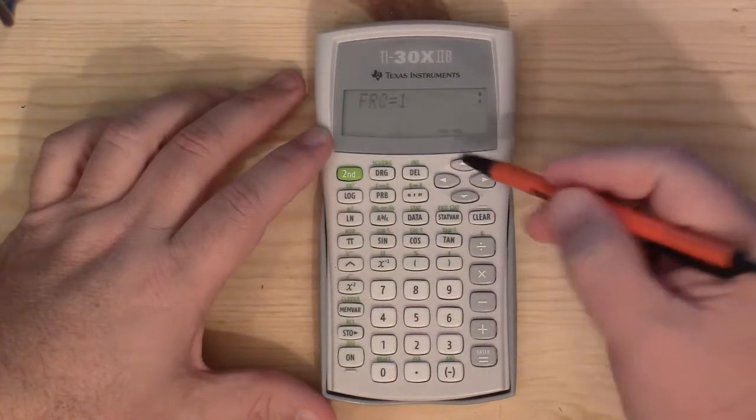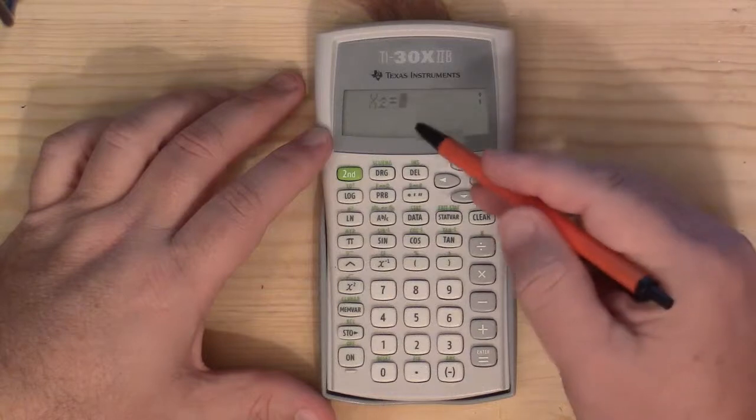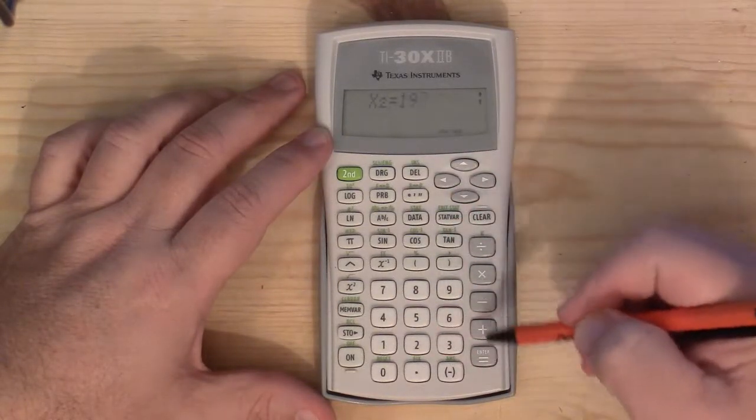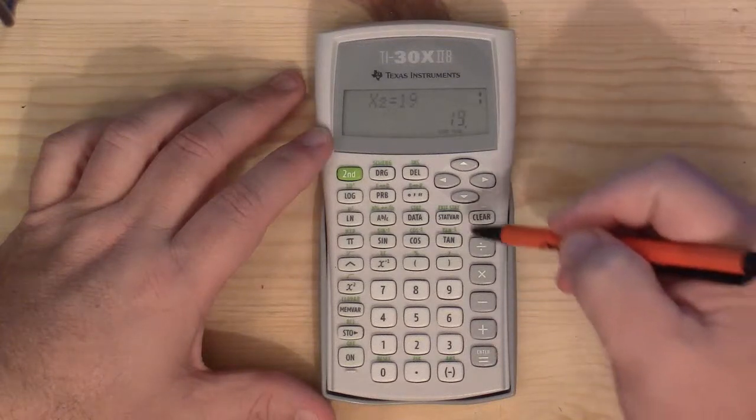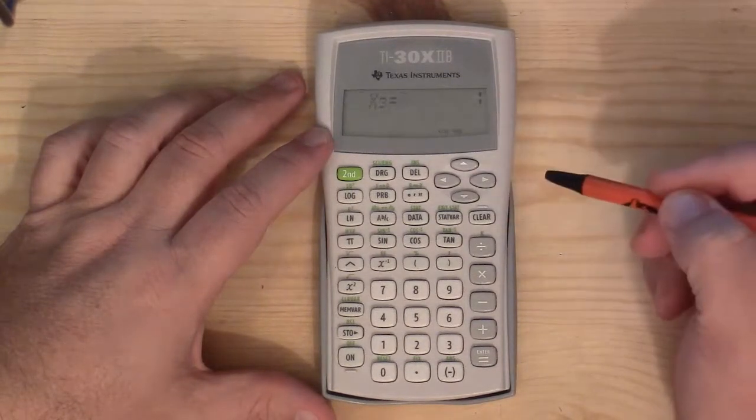Then we do the down arrow which goes to frequency and we leave that as 1. That's how many 13's you have. Then I'll do down arrow again and it'll ask me for X2 which is 19. Press equals. Then down arrow. Frequency is 1, that's fine. Down arrow again.